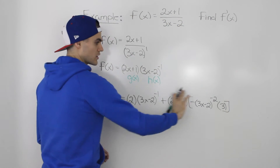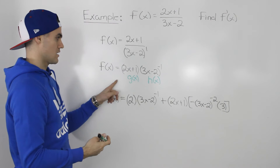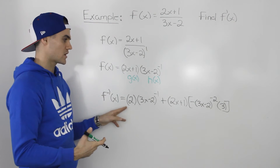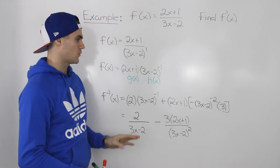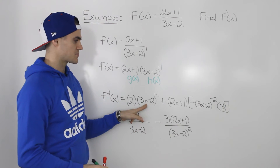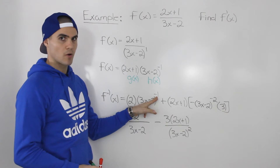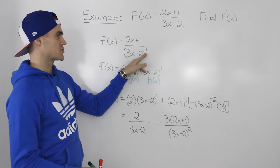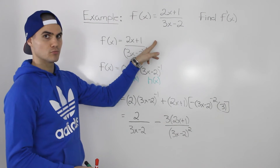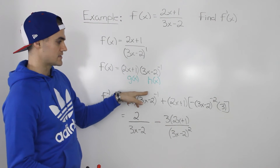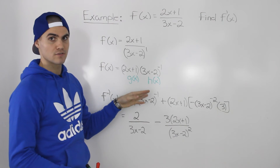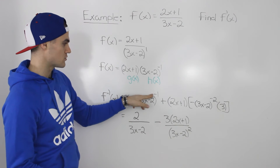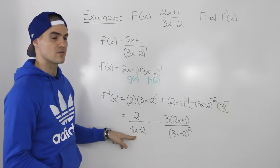This whole expression represents the derivative of the function. However, let's try to simplify it and make it look a little nicer. To simplify, take any expressions with a negative exponent and bring them back down to the denominator. Here we had taken expressions from the denominator and brought them up to the numerator. Now that we have the derivative, we bring any expressions with a negative exponent back down. So 3x minus 2 to the power of negative 1 is brought down to the denominator, and the 2 stays in the numerator.